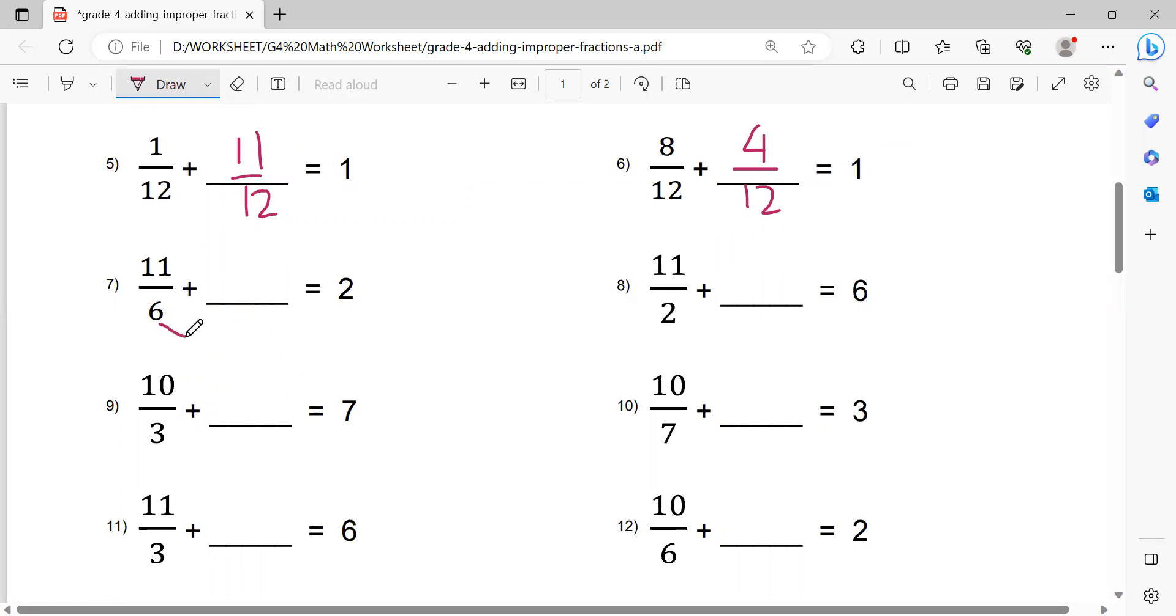6 times 2 equals 12, minus 11 equals 1. 1 over 6. Now number 8. 2 times 6 equals 12, minus 11 equals 1. 1 over 2.